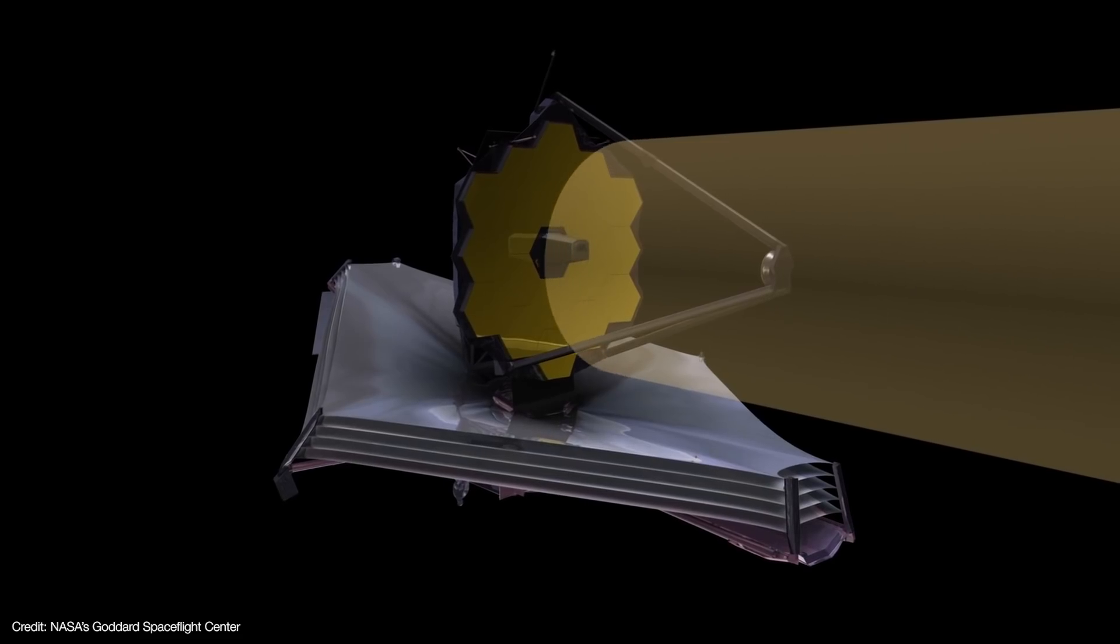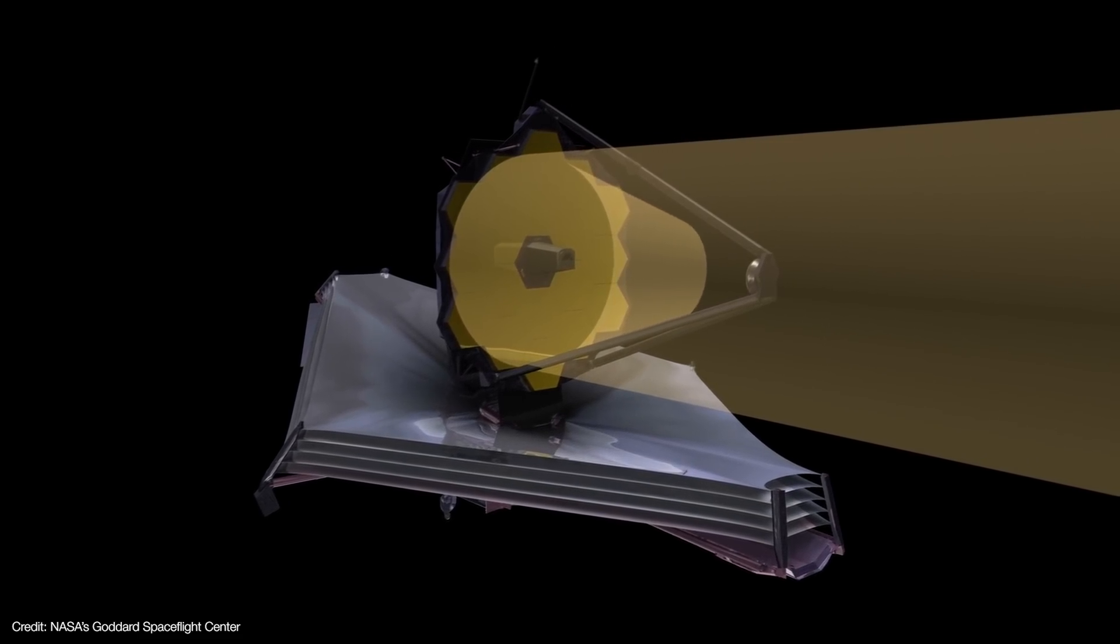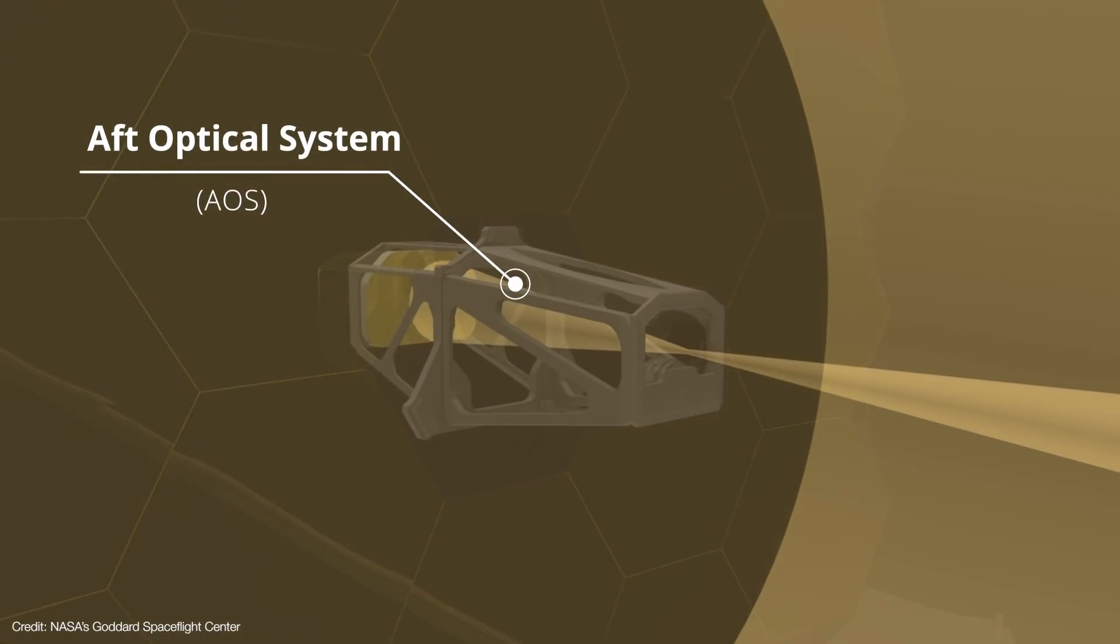The primary mirror has a concave shape that sends light to a convex-shaped secondary mirror. The secondary sends the beam into the aft optical system, or AOS.